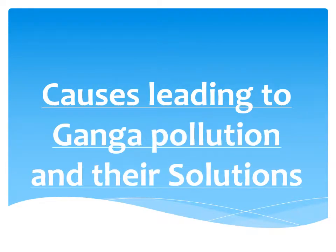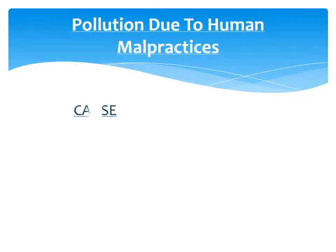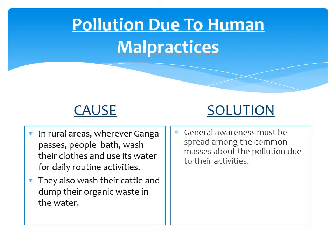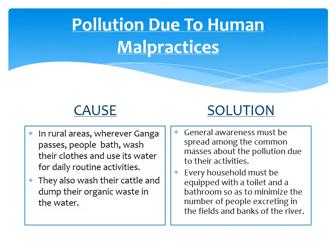Causes and solutions — pollution due to human malpractices: In rural areas, wherever Ganga passes, people bathe, wash their clothes and use its water for daily activities. They also wash their cattle and dump organic waste in the water. Solution: General awareness must be spread among the common masses about pollution due to their activities. Every household must be equipped with a toilet and bathroom so as to minimize the number of people excreting in fields and on the river banks.